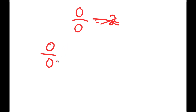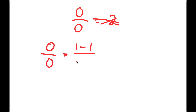Well, 0 over 0 — this is the same thing as 0, which is the same thing as 1 minus 1, meaning 0 over 0. I can write this as 1 minus 1 over 1 minus 1. And this is right because 1 minus 1 is 0, so this is the same thing as 0 over 0.